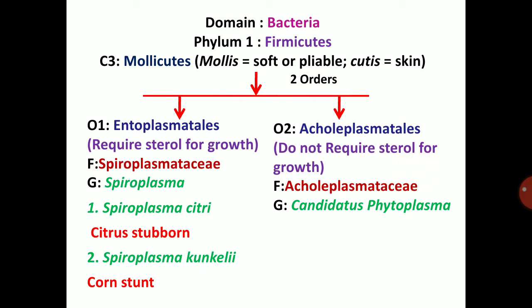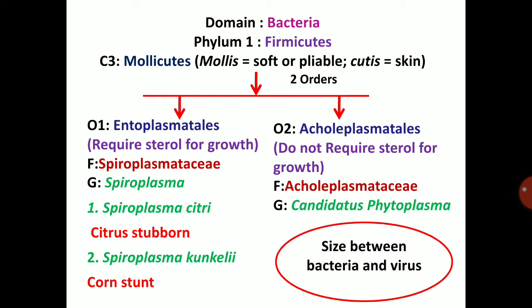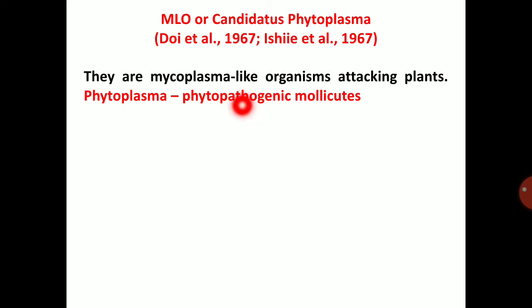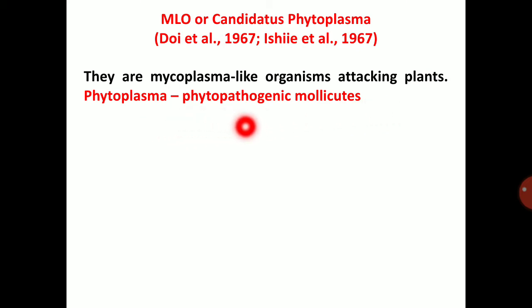Family Acholeplasmataceae, genus Candidatus Phytoplasma. Size is between bacteria and virus. First of all, MLO or Candidatus Phytoplasma was first reported by Doi et al. 1967 and Ishi et al. 1967. MLO means mycoplasma-like organism. Candidatus Phytoplasma is nothing but a mycoplasma-like organism attacking plants. Mycoplasma infecting animals is called mycoplasma; infecting plants is called phytoplasma — phytoplasma means phytopathogenic mollicutes.